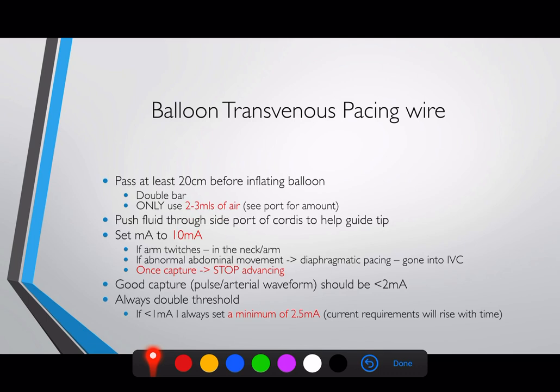Then see what's happening: if you've got no twitch, you're probably still in the superior vena cava or not quite hitting the ventricle. If you get arm or neck twitches, the wire has gone down into the subclavian vein. If you see the diaphragm pacing — abnormal abdominal movements — you've gone past the right atrium into the inferior vena cava. If that happens, pull back the catheter a little bit and then re-advance.